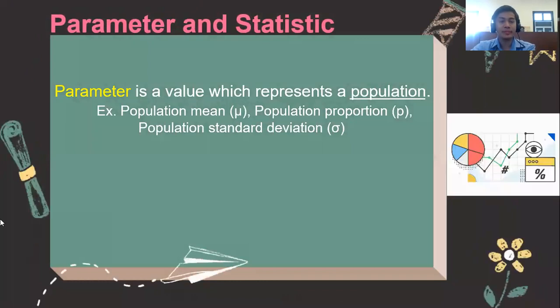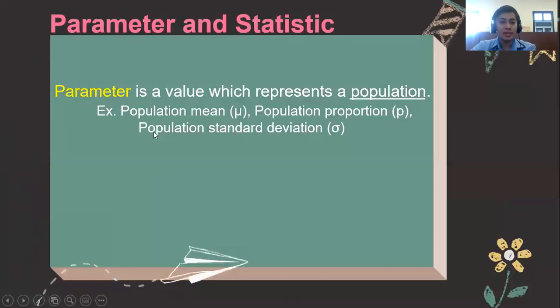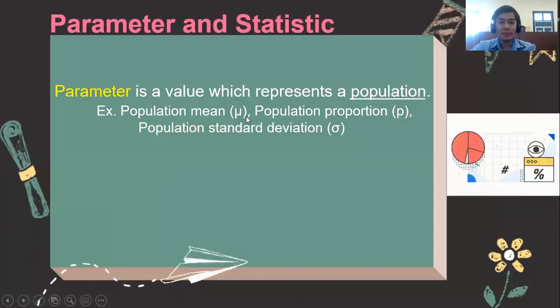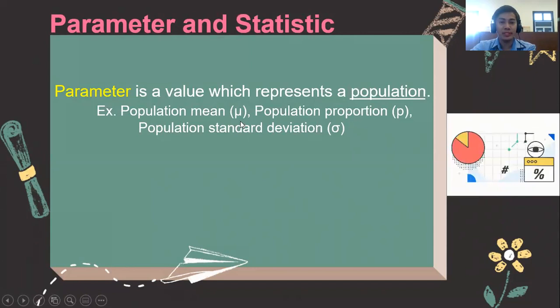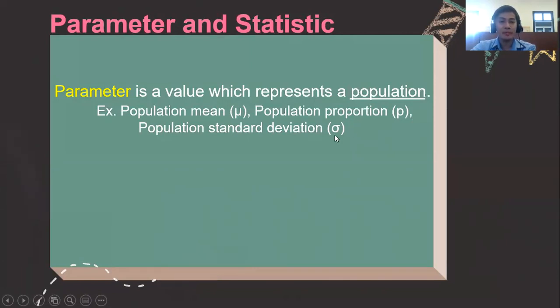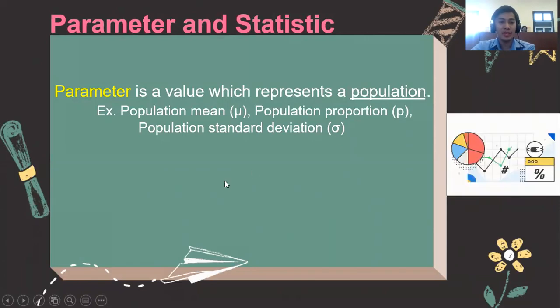What is a parameter? A parameter is a value which represents a population. Examples of these are the symbols μ (mu), p, and σ (sigma). μ is the population mean, p is the population proportion, and σ is the population standard deviation.